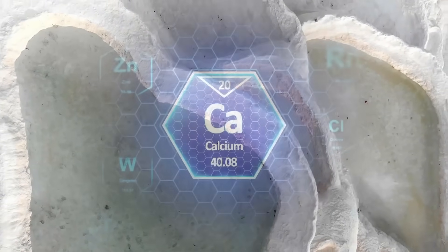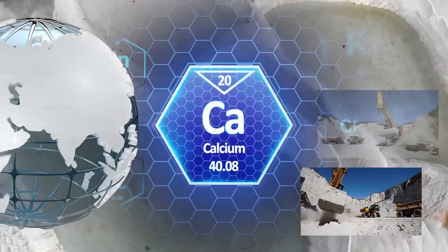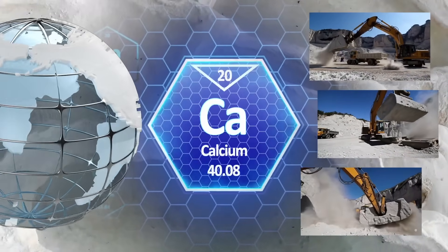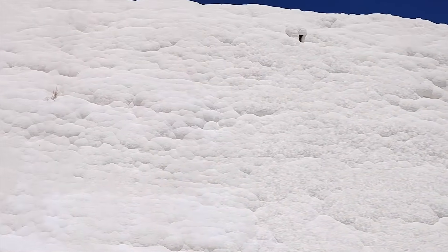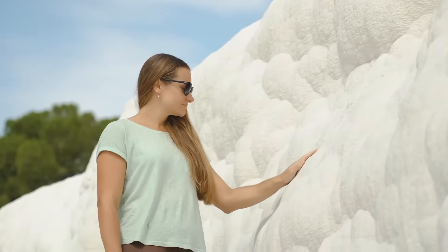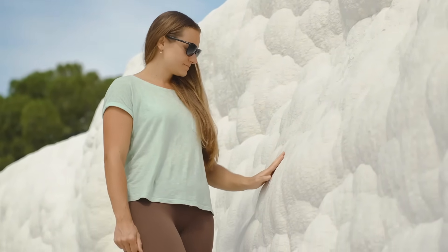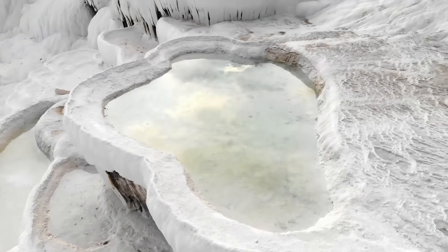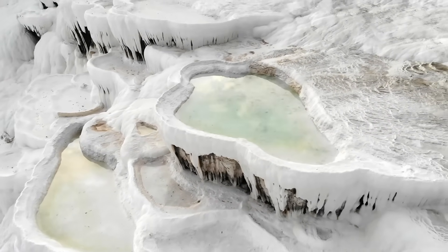Calcium carbonate is mined as a mineral in many countries and annually processed in millions of tons. Its natural availability is combined with exceptional properties, including a high whiteness of up to 98 percent, inertness to most chemicals, the ability to improve the mechanical properties of polymer compositions, and even antibacterial properties in nanoform.